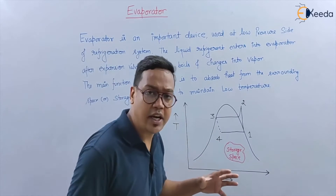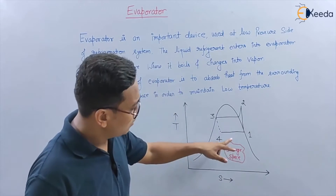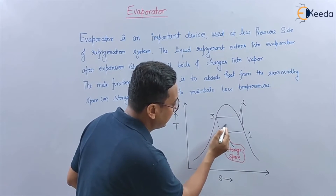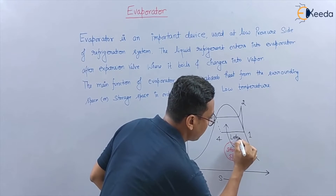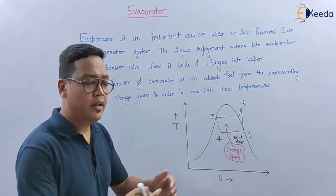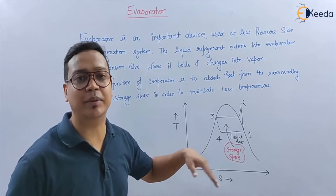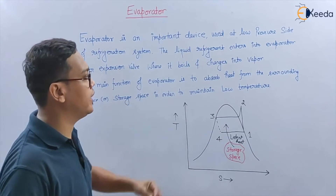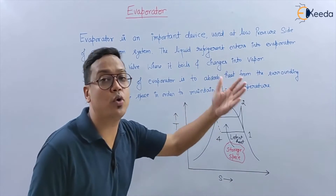In the evaporator, the refrigerant will boil and change into vapor. It will take latent heat from the storage space in order to maintain low temperature in the storage space or surrounding space. The main function of the evaporator is to absorb heat from the surrounding space or storage space in order to maintain low temperature.